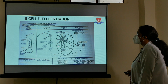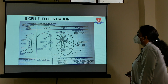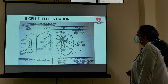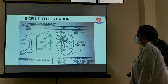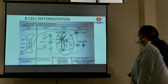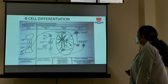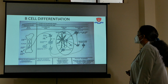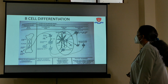When they develop from the parafollicular area cells, they develop into mantle cell lymphoma. If they develop from germinal center cells — either from centroblasts or centrocytes — then follicular lymphoma, Burkitt's, diffuse large B-cell lymphoma (DLBCL), and Hodgkin's lymphoma develop. If they develop from plasma cells, plasma cell neoplasms arise. From the perifollicular area, marginal zone and MALT lymphomas develop.